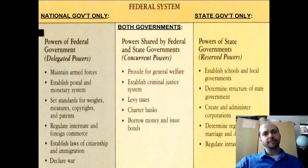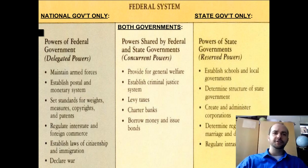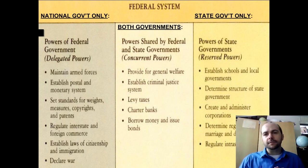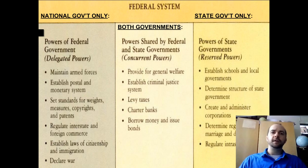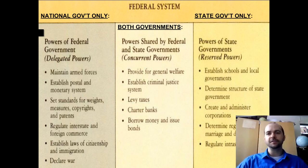The national government has delegated powers — a delegate is someone chosen and sent as a representative, so these are powers chosen and given to the national government. State government powers are called reserved powers, meaning they are kept and held by the state governments and not given away. Concurrent powers means shared powers held by both levels of government. Read through these different powers to understand, and you'll see these powers in action in our daily life.